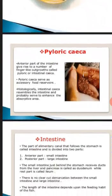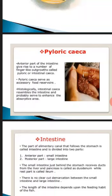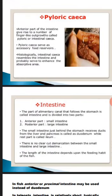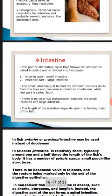The part of the alimentary canal that follows the stomach is called the intestine, divided into two parts: the anterior part is the small intestine and the posterior part is the large intestine. The small intestine, just behind the stomach, receives ducts from the liver and pancreas and is called the duodenum, while the rest is called the ileum. There is no clear-cut demarcation between small and large intestine in fishes. The length of the intestine depends upon the feeding habit of the fish.